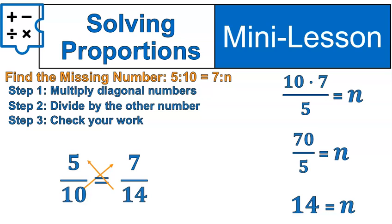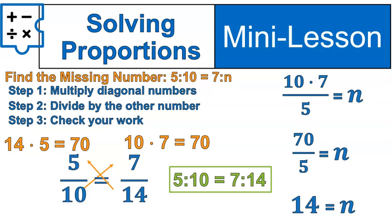Let's check our work. Cross-multiplying: 5 times 14 and 10 times 7. They both give you 70. Therefore, you know your work is right. 5 to 10 is equal to 7 to 14.